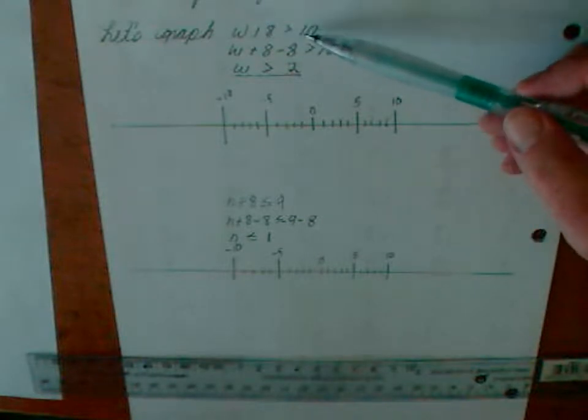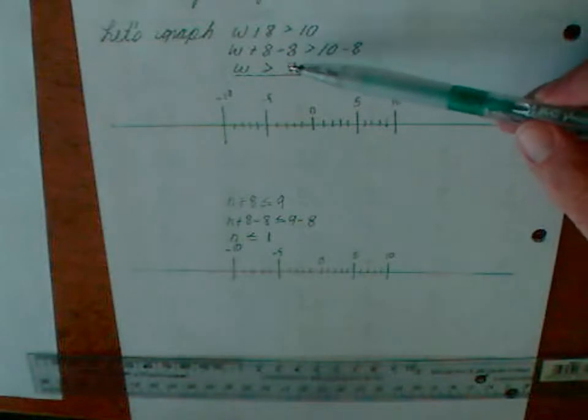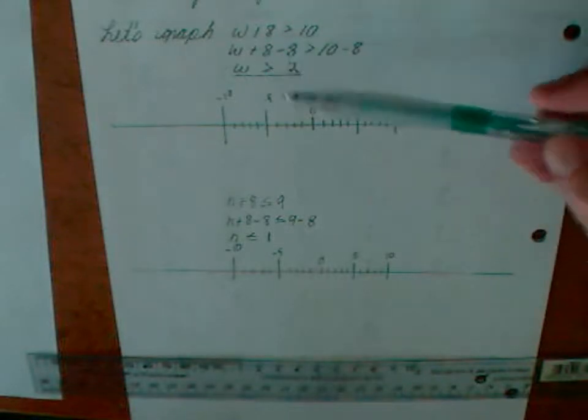W plus 8 is greater than 10, and then we go through the steps and we solve it. So W is greater than 2.